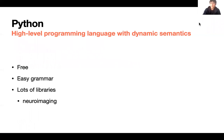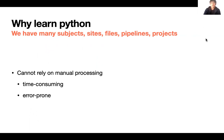Python is a high-level programming language with dynamic semantics — you don't have to know what that means. It is free. It has an easy grammar and loads of libraries, including neuroimaging libraries. Why do we learn Python? We have many subjects, many sites, and many files. We have many pipelines to apply and many projects as well, so we cannot rely on manual processing all the time.